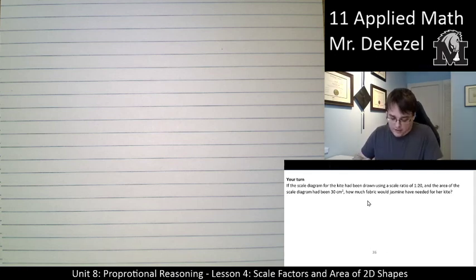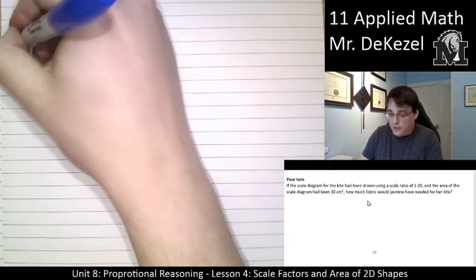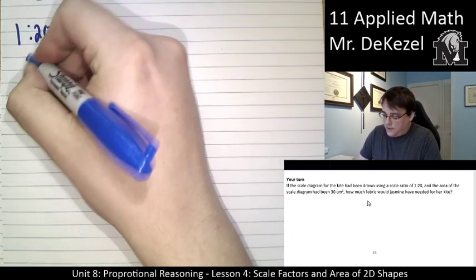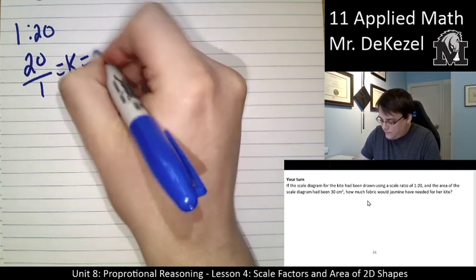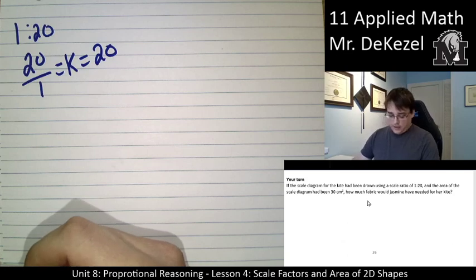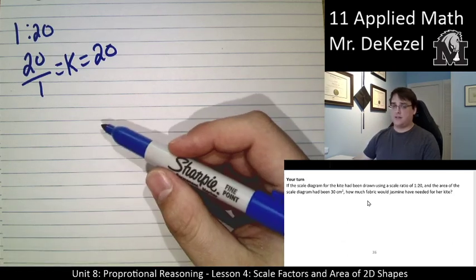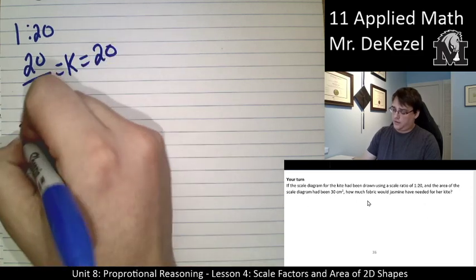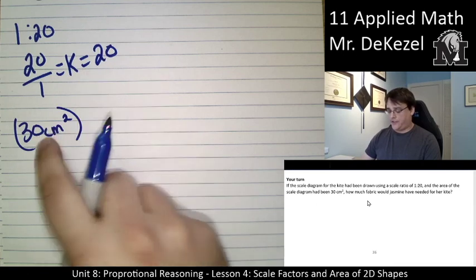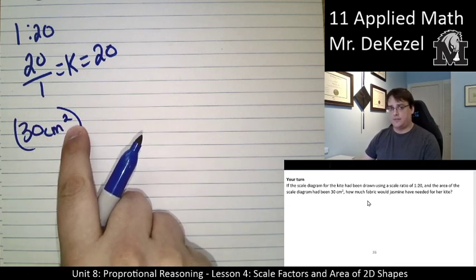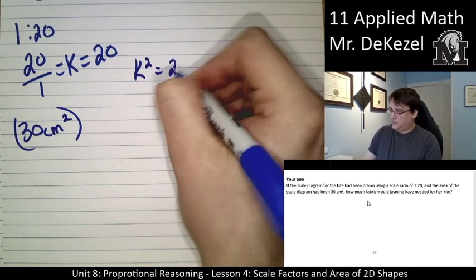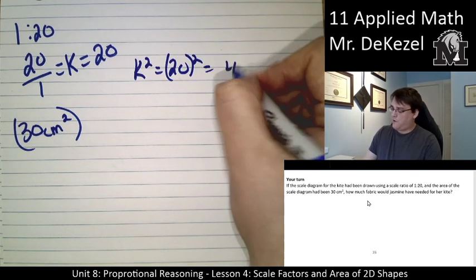Okay, so if the scale diagram had been drawn in a 1 to 20 ratio, that means that our scale factor would be 20 divided by 1, which is just 20. We're talking about area still because we have 30 centimeters squared. So this k factor isn't going to work for this because this is an area unit, centimeters squared. So we're going to have to square k. k squared is equal to 20 squared, which is 400.